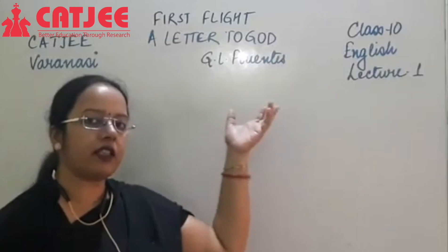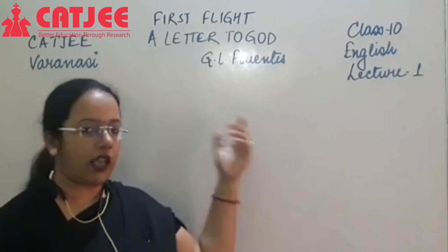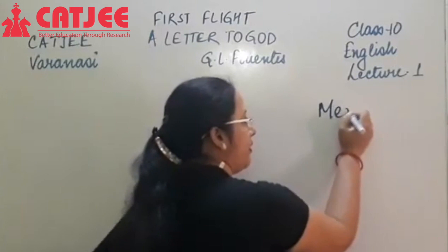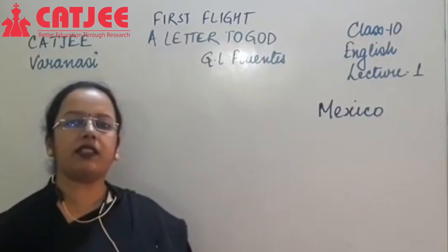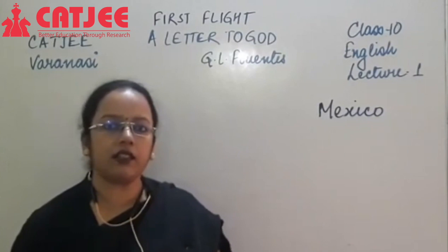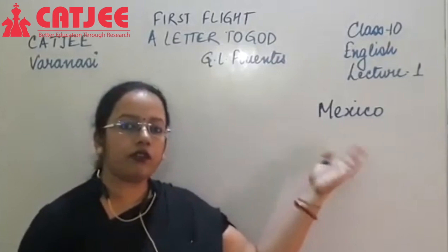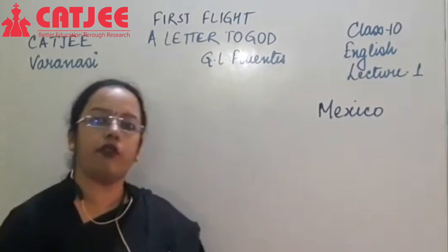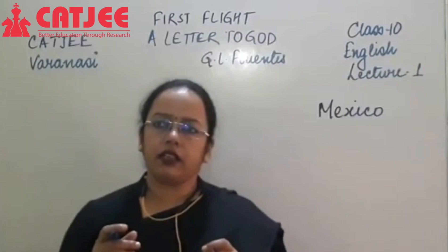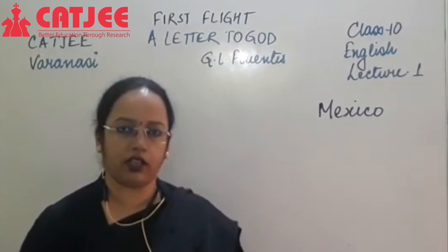'A Letter to God' is a short story written by a famous Mexican writer, short story writer and journalist G.L. Fuentes. As I mentioned, this story is set in Mexico. Mexico is a country in North America and it lies on the southern side of the USA. G.L. Fuentes belongs to this country and is also considered a major chronicler of the Mexican Revolution.